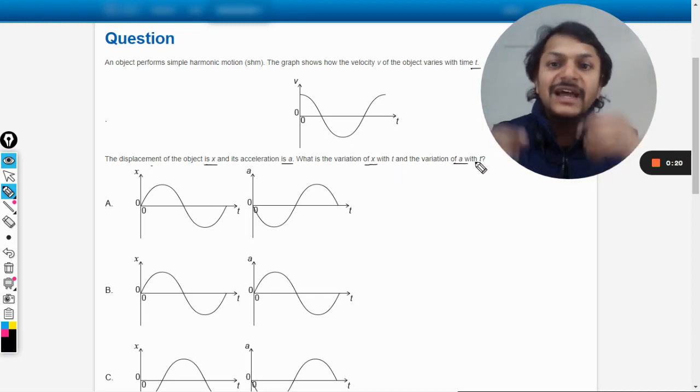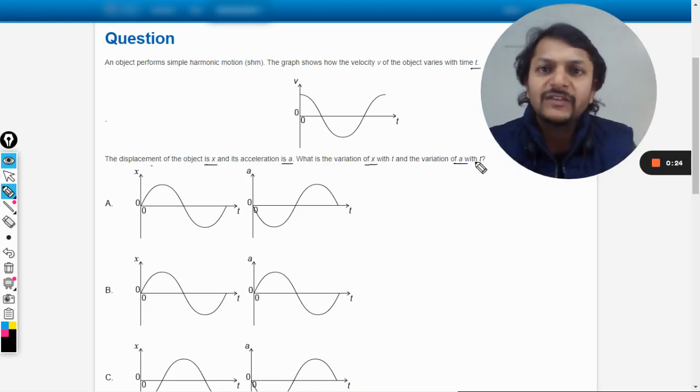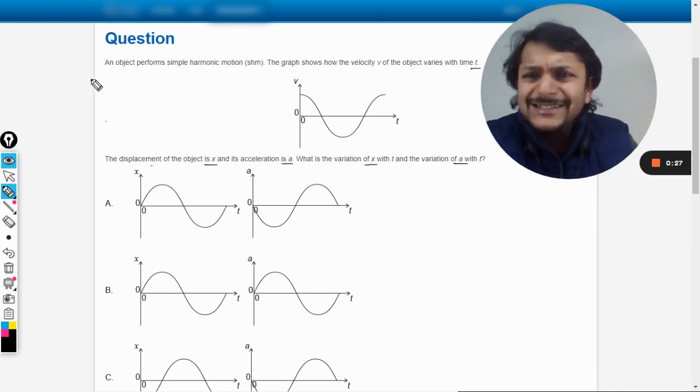What is the variation of x with time t and the variation of a with time t? It means that the velocity function is plotted in front of you and you need to find the displacement and the acceleration.